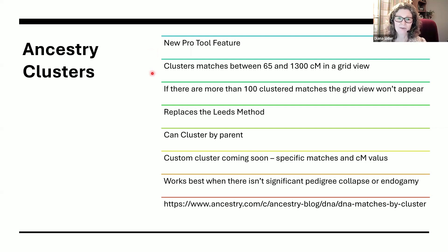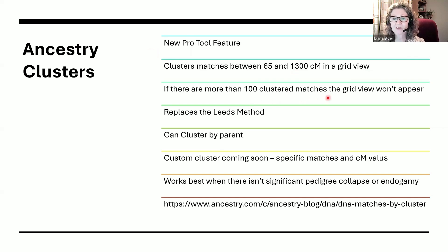It did say on the website that everyone will have it by the end of the year, and I have no idea how they are deciding who gets it, but I was excited when I saw it pop up in my features and so I can demonstrate it, and then you can hopefully use it or wait until it comes for you. So right now it will cluster your matches between 65 and 1300 centimorgans in a grid view, but there is one caveat — if there are more than 100 clustered matches, then you won't see the grid view. I'll show you what you will see instead — you still get your clusters, just in a little different way.